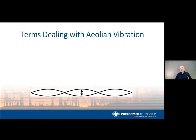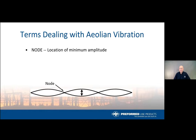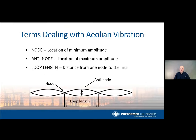There are a few terms we need to use to help define cable motion. First is the node — the location of minimum or no movement. The anti-node is the point of maximum movement or amplitude. The loop length is simply the distance from one node or anti-node to the next node or anti-node.